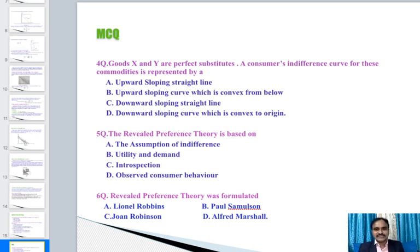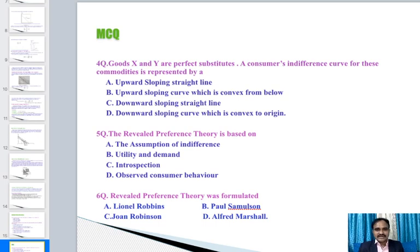Question 5 — The revealed preference theory is based on: assumptions of indifference, utility and demand, introspection, or observed consumer behavior? The answer is D — observed consumer behavior.